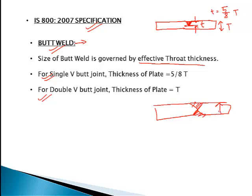For a single V butt weld, effective throat thickness is 5/8 of the plate thickness, and for double V it is simply the thickness of the plate. If two plates in a butt joint are of different size — for example, if one plate is 18 mm and the other is 16 mm — we always take the smaller plate thickness.